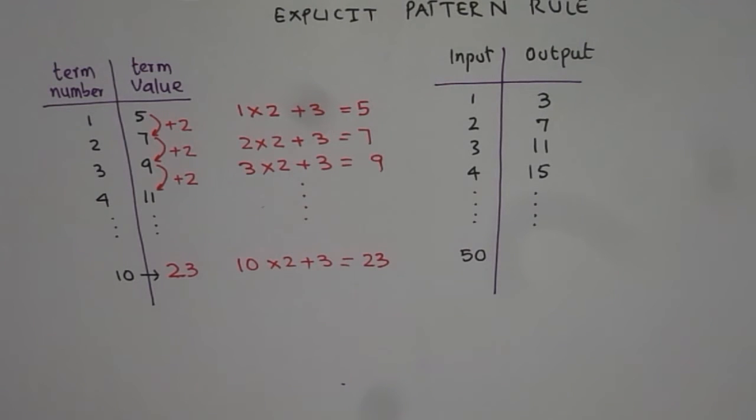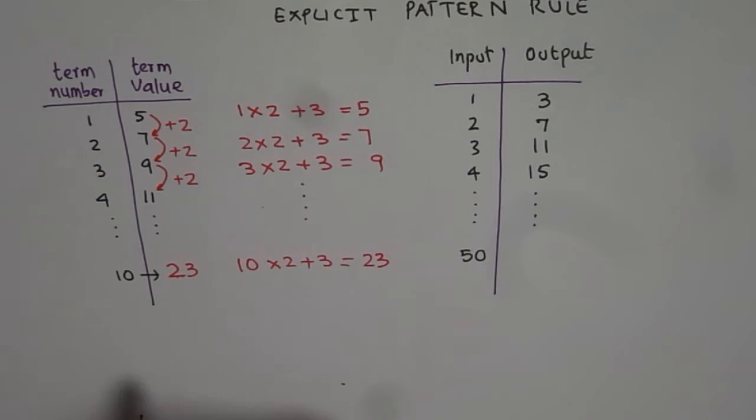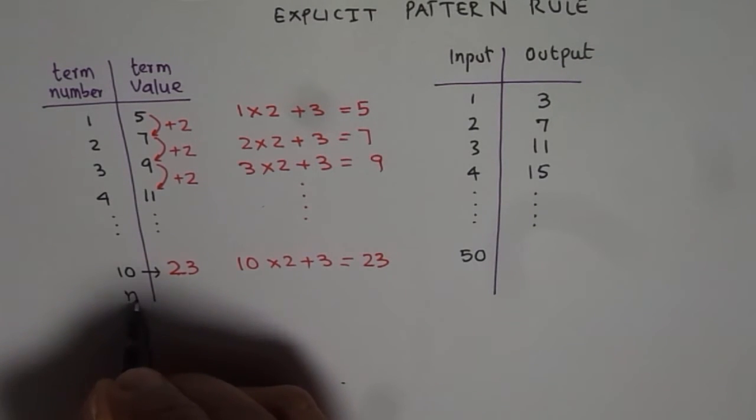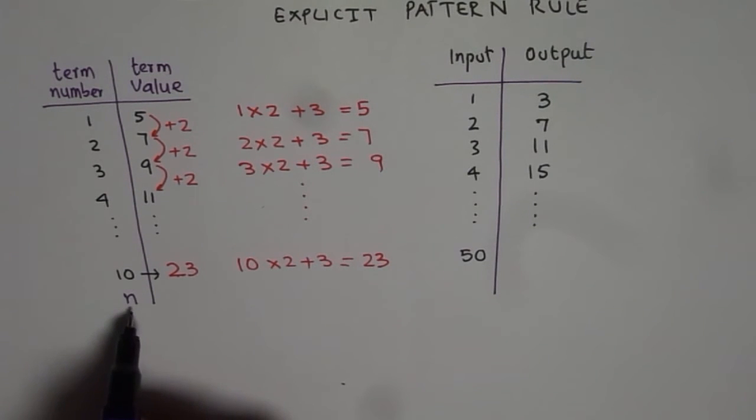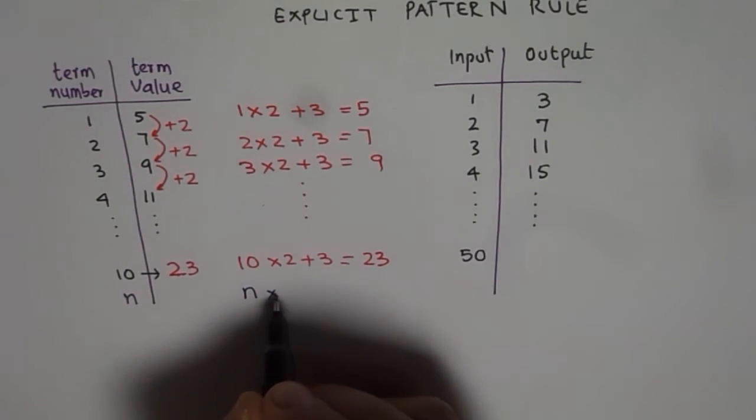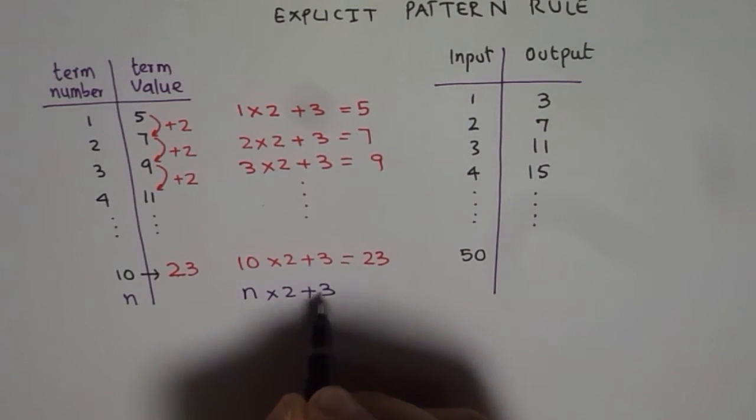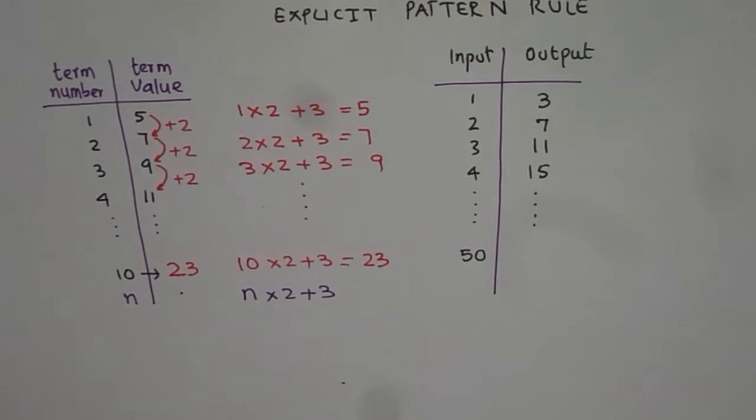In general, I can write down this rule as for any number n. Let us say n is the nth term. In that case, it will be n times 2 plus 3. That will give me this output. Do you see that? 2 times n plus 3. So that becomes my explicit pattern rule for the first pattern.